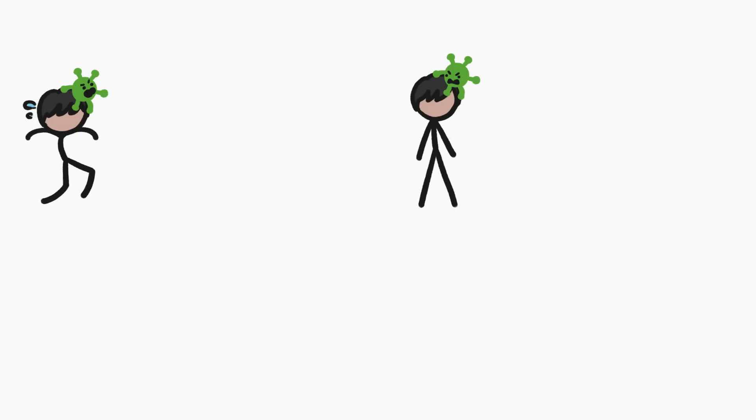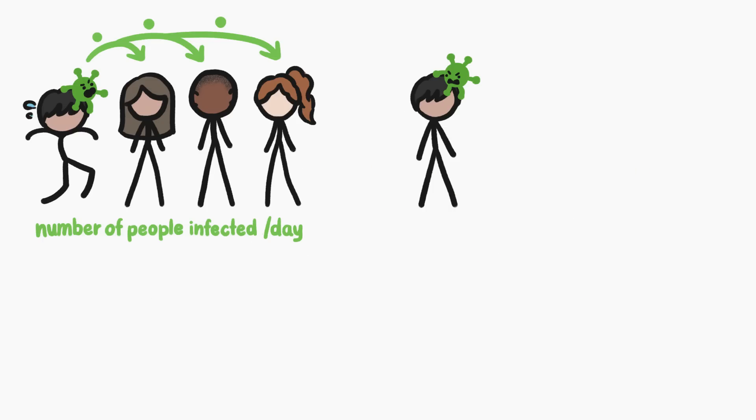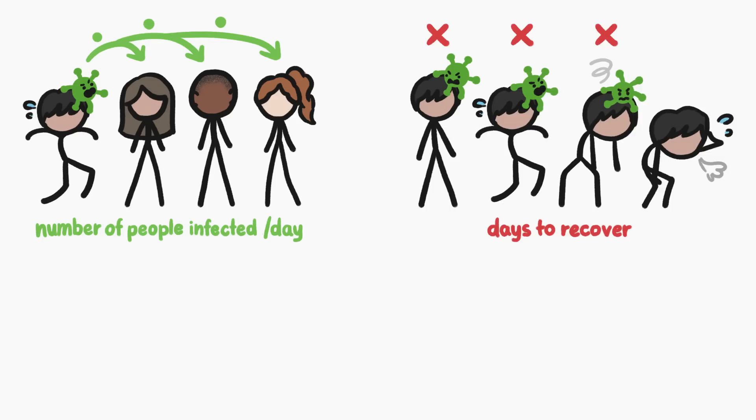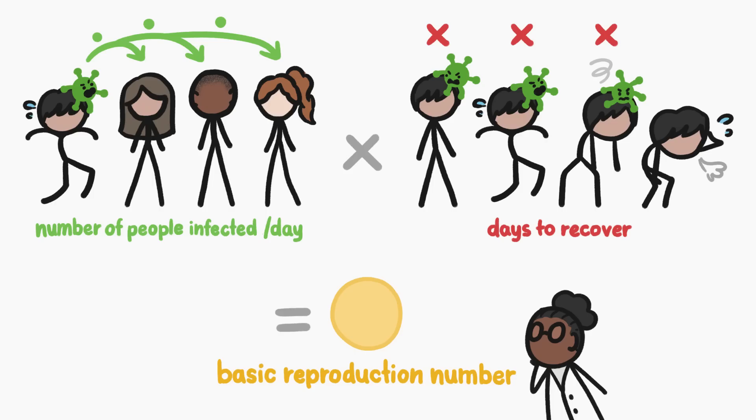The two big things that determine the curve's trajectory are how many people an infected person can infect per day, and how quickly a person stops being contagious. If you multiply one by the other, you get what epidemiologists call the basic reproduction number, which is basically an estimate of how contagious the infection is.